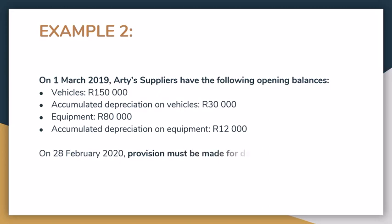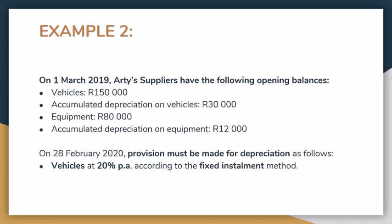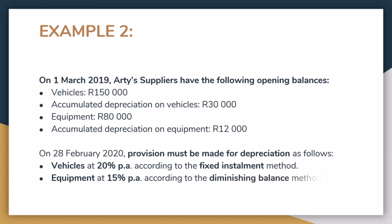Then it says on 28 February 2020, which is 12 months later, provision must be made for depreciation as follows: vehicles at 20% per annum on the fixed installment method — if you looked at last week's presentation, you'll see that's just a synonym for the cost price method. And equipment at 15% per annum on the diminishing balance method — that's the one where you first have to calculate the carrying value. Now before we start recording this, we've got to record two transactions: the depreciation for the vehicles at the end of the year and the depreciation for the equipment. But before we can start doing that, we must first go and calculate the depreciation for each.